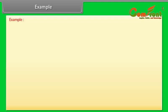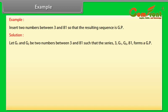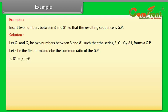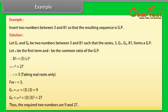Example: Insert two numbers between 3 and 81 so that the resulting sequence is a GP. Let g₁ and g₂ be the two numbers such that 3, g₁, g₂, 81 form a GP. Then 81 = 3×r³, so r³ = 27, therefore r = 3. Thus g₁ = 3×3 = 9 and g₂ = 3×3² = 27. The required two numbers are 9 and 27.